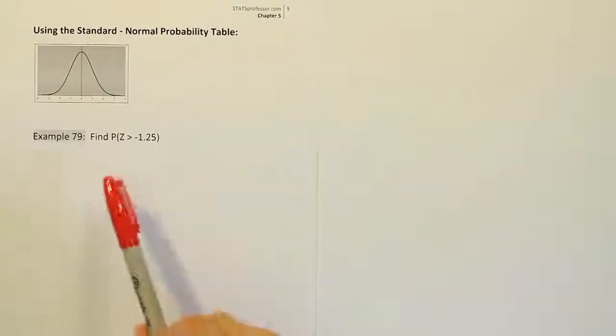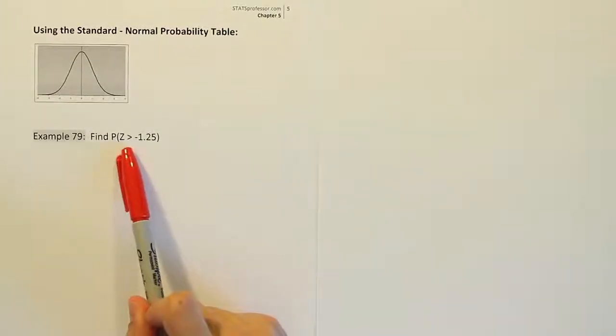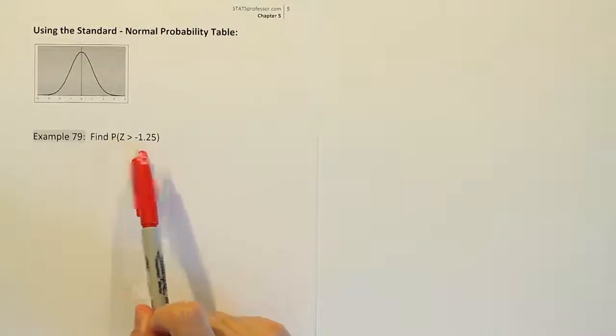Alright, so in example 79 we're trying to find the probability that a standard normal random variable is greater than negative 1.25.